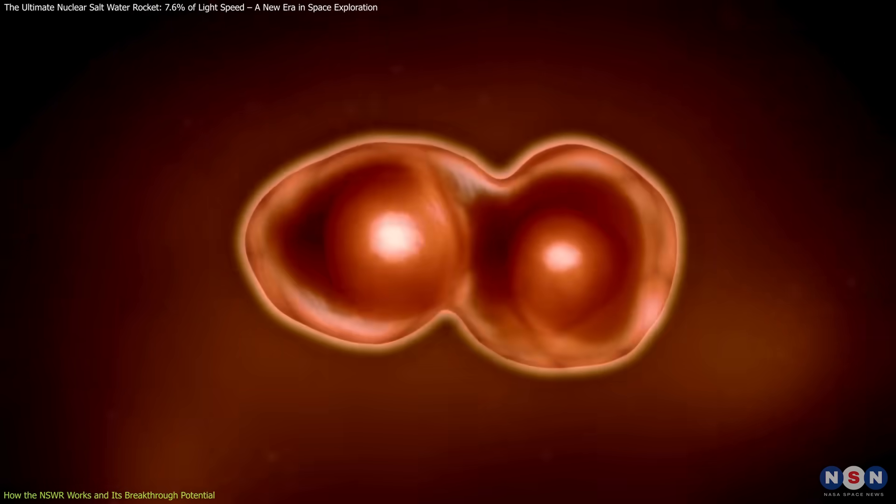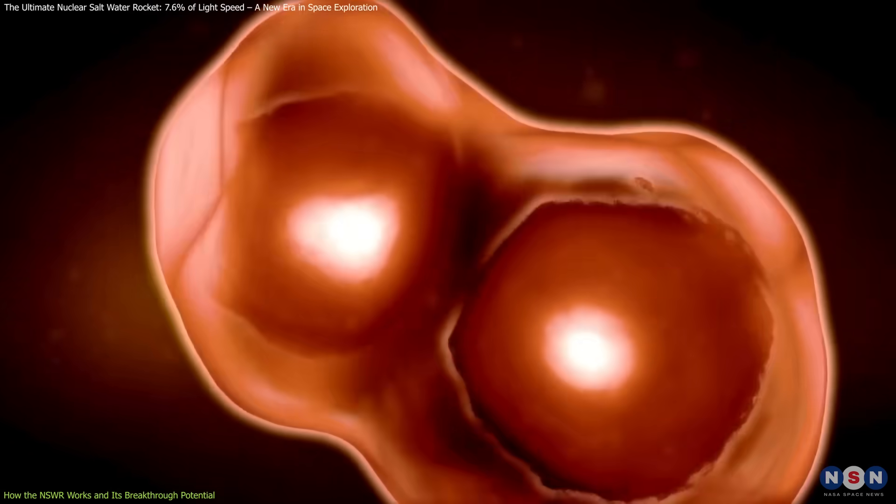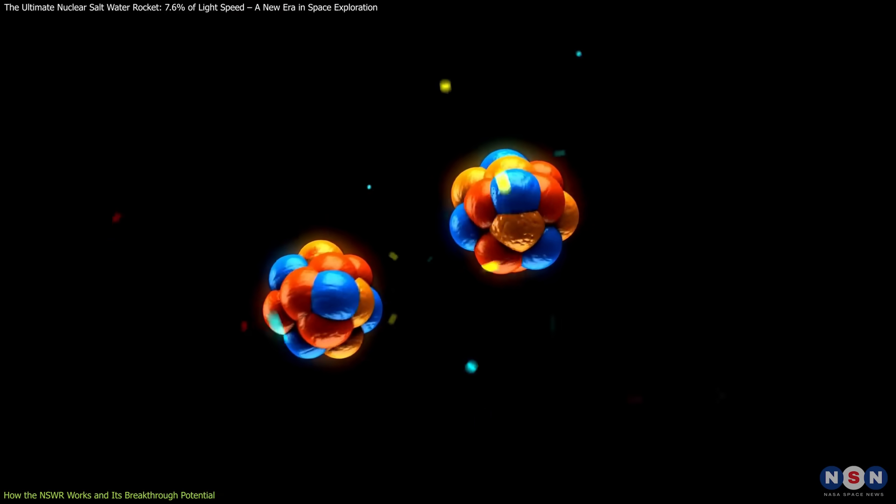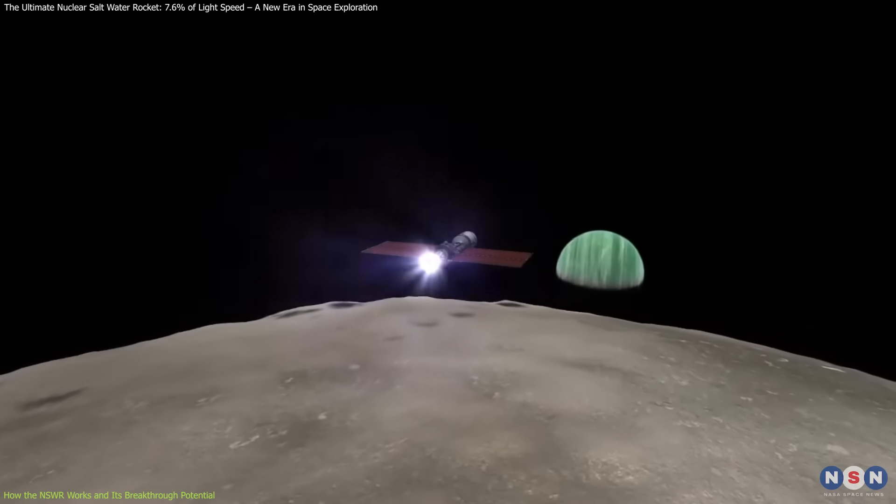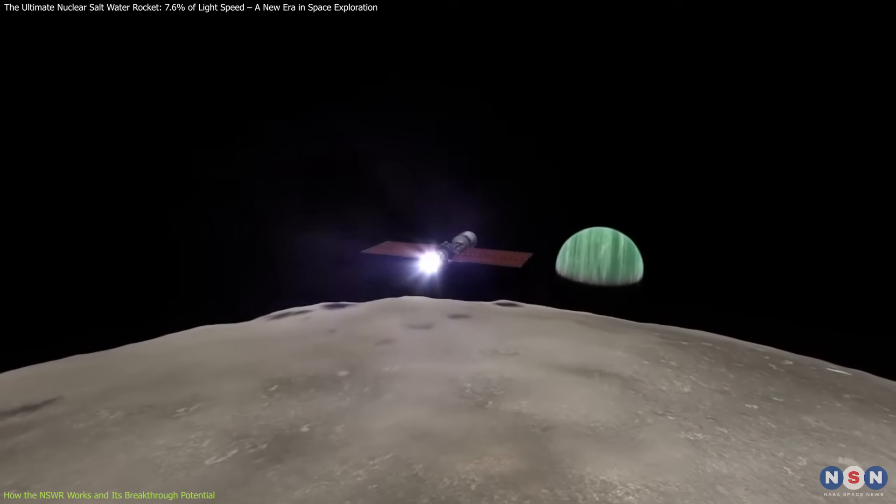As it accumulates, the concentration of uranium reaches critical mass, triggering an ongoing nuclear fission reaction. The energy released from this reaction superheats the water, turning it into a high-energy plasma that is expelled through a nozzle to generate tremendous thrust.